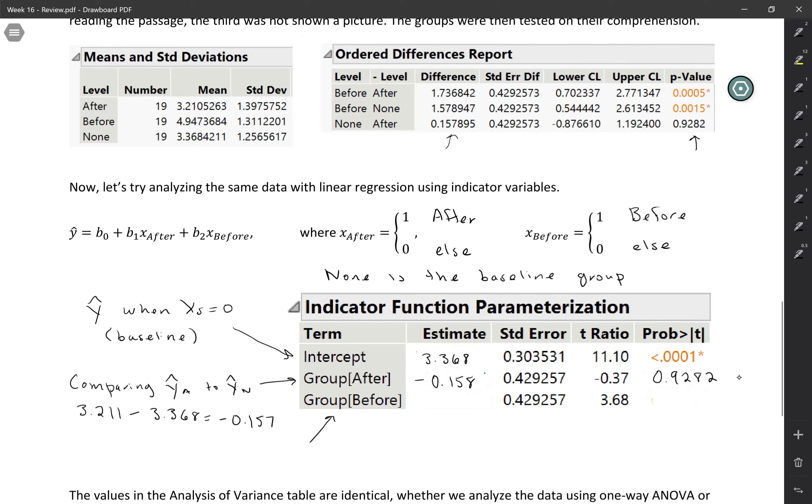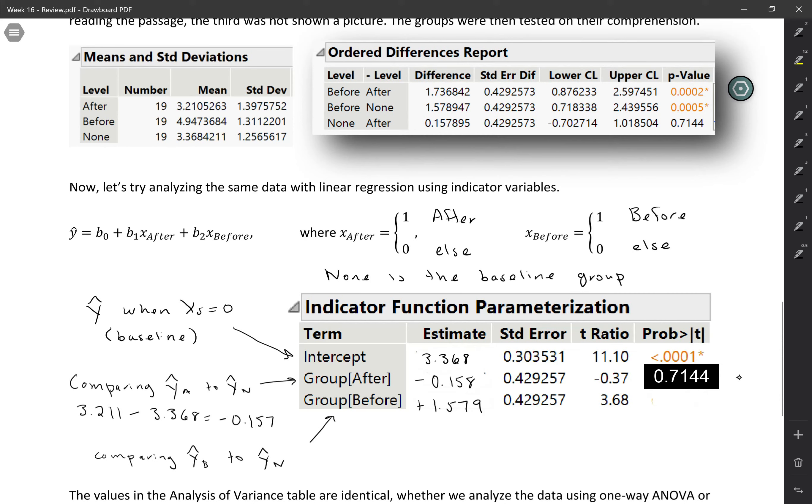And then this one down here, group before, this one's going to be very similar, except that obviously instead of comparing the predicted value for the after group, you're doing it for the before group, but still comparing to the baseline of none. And in this case, the ordered differences output is actually subtracting in the right direction. It's doing before minus none. So I'm just going to steal that number from there. So plus 1.579. And I can also get my p-value from there. So my p-value for the difference between before and none is 0.0015. So there is a significant difference whether you see the picture before reading the ambiguous prose or not at all.